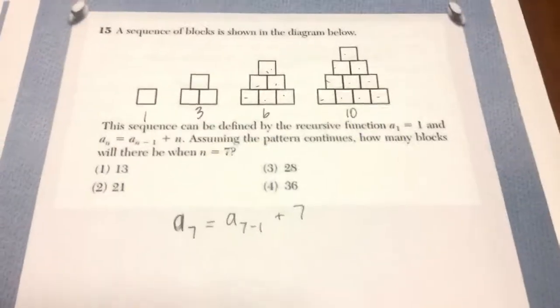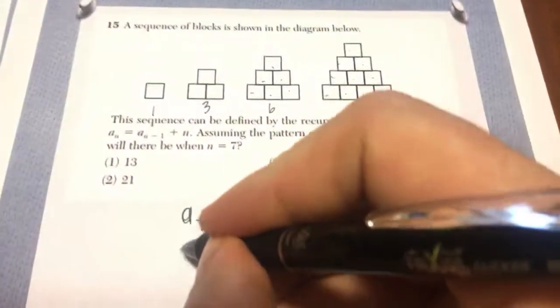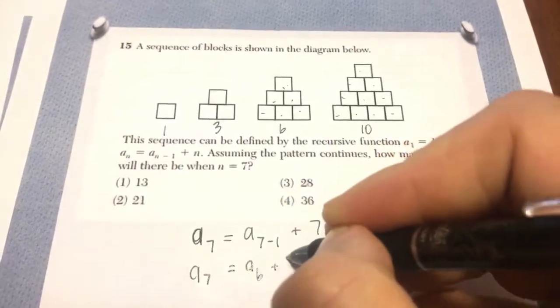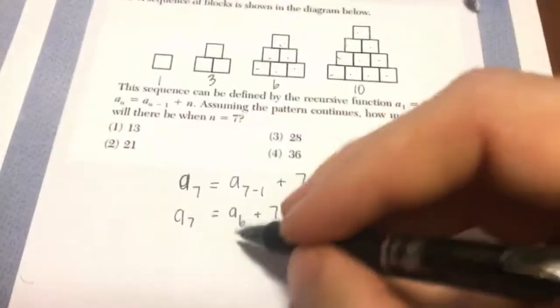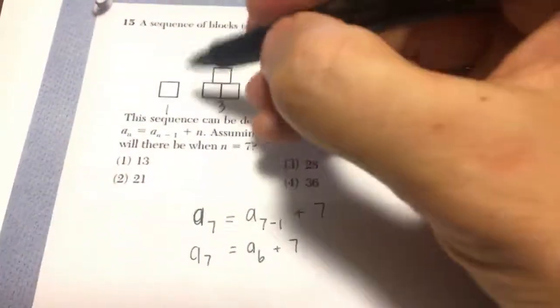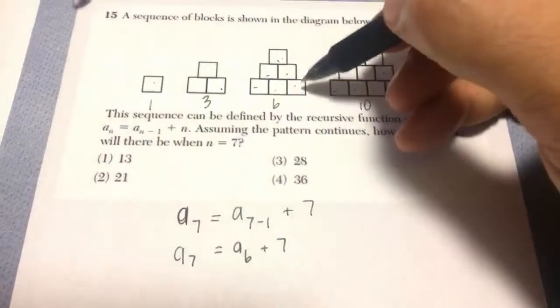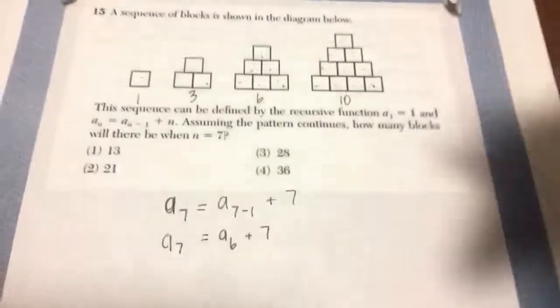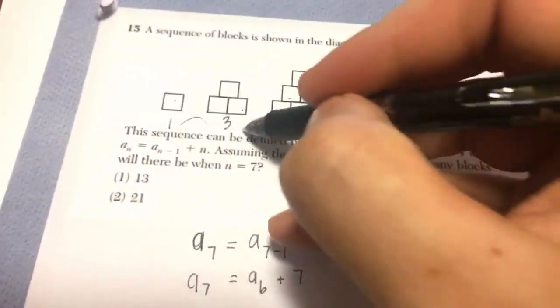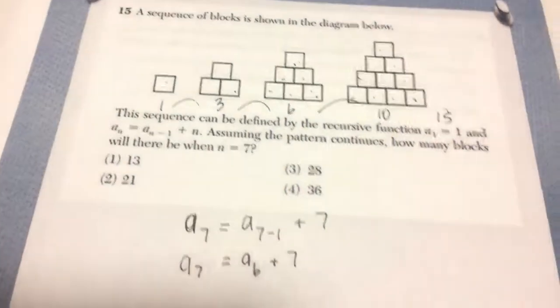For this recursive relationship you want to find how many blocks there will be when n is 7. So I plug in 7 for n, a sub 6 plus 7. Well, in the first term we had 1 block. In the second term we had 3 blocks. Third term we had 6. Fourth term we had 10. The fifth one we're going to have, you see how we're adding 2, we're adding 3, we're adding 4, we're adding 5, we should have 15 blocks. Then we're going to add 6, we should have 21.